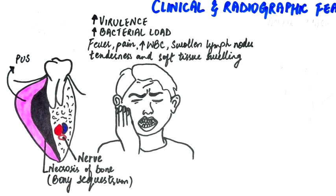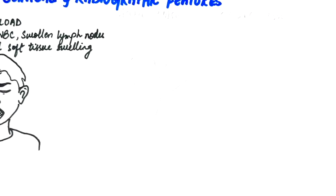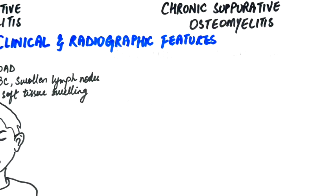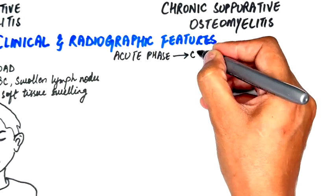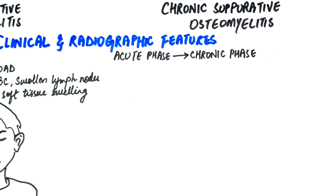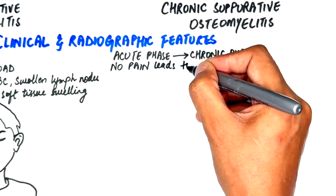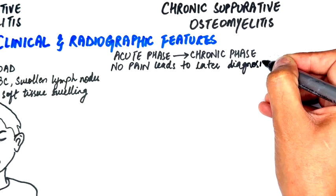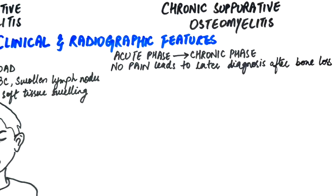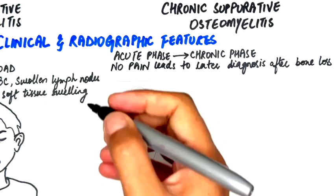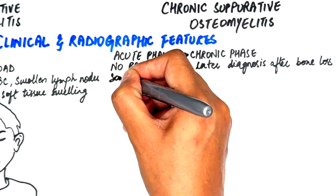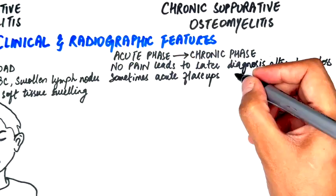Chronic suppurative osteomyelitis occurs when acute osteomyelitis goes untreated, evolving into a condition that can be a silent killer due to its chronic nature. However, it may develop independently in some cases without a preceding acute phase. In chronic osteomyelitis, patients often do not experience pain symptoms, leading to later diagnosis after significant bone loss has occurred. While the condition progresses in a persistent, low-level manner, individuals might suffer from acute flare-ups or intervals of reduced pain.